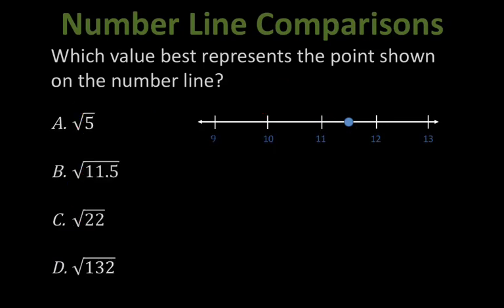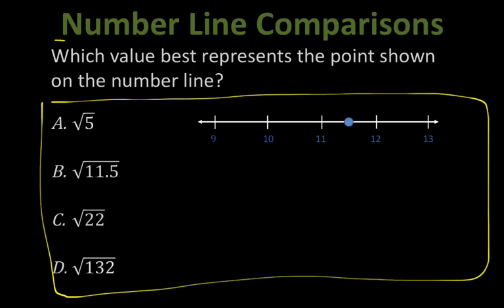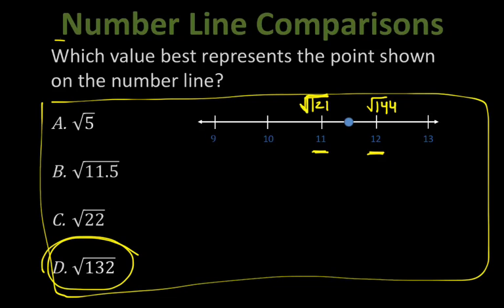See if you can figure this one out on your own. If I take a look at 11 and 12 and find their perfect squares written as square roots: square root of 121 is 11, and square root of 144 is 12. The only option that fits between them is D — square root of 132. That's the only one that's going to fit in between 11 and 12.